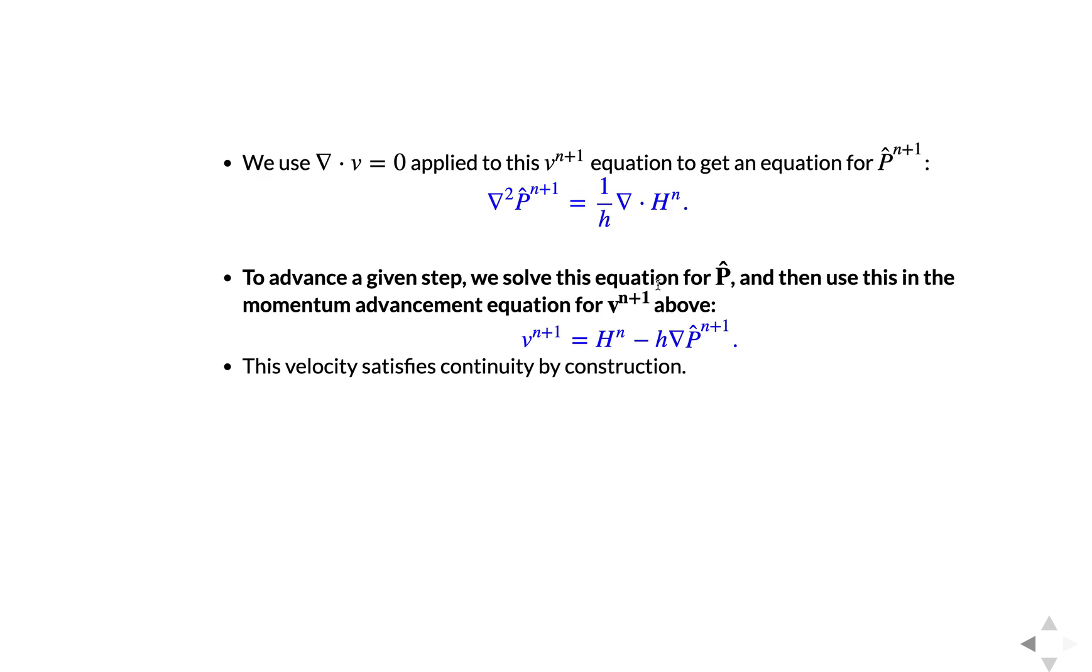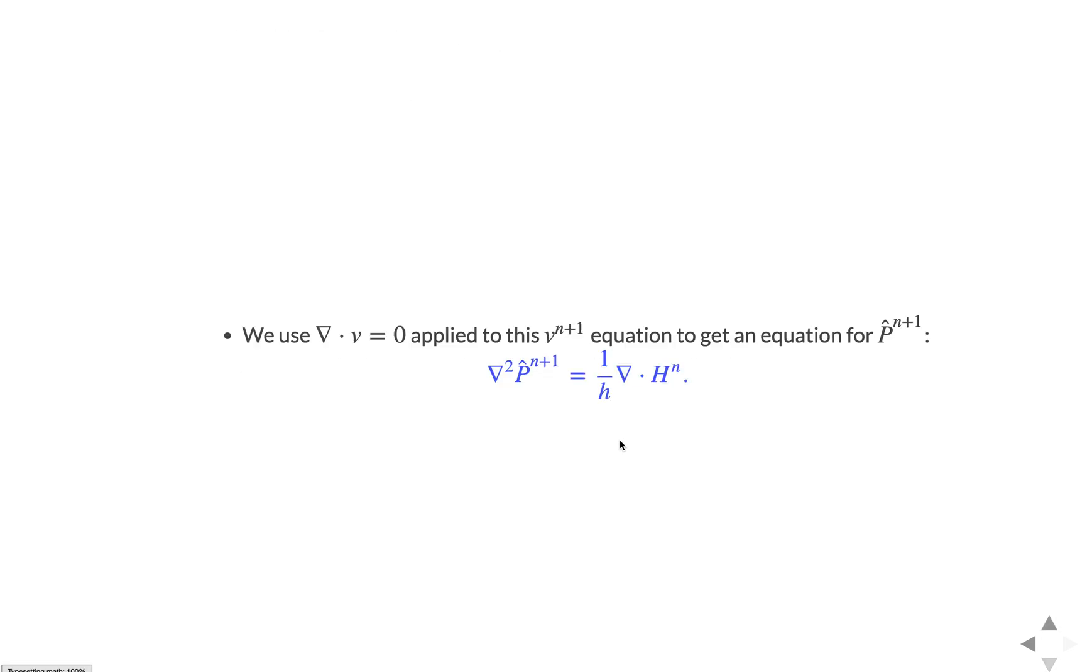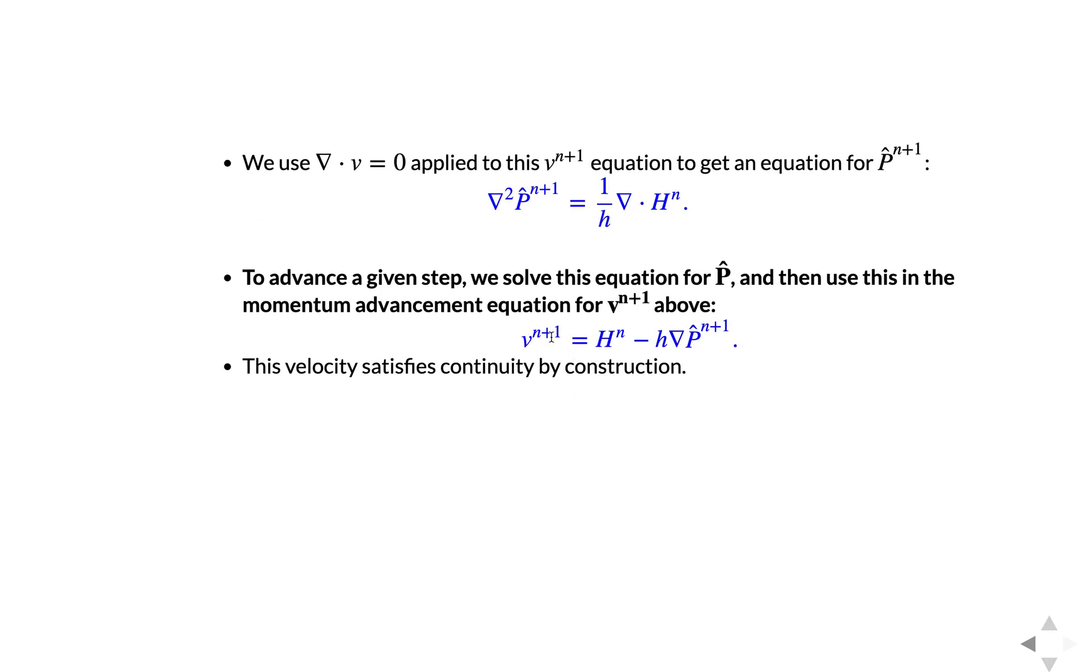So to advance a given step, we first solve this equation. So if we start at step n, then we can calculate the right hand side. Then we solve this equation for p n plus one. And then with p n plus one, we can apply the velocity equation that we had before, which is simply this one. And the resulting velocity that we get will satisfy continuity by construction. So you literally advance your solution by starting with an initial condition at time n, solve pressure, use it to advance velocity, then solve right hand side, solve pressure, use it to advance velocity, and so forth. So you're literally just solving these two equations in succession for each time step. Easy.